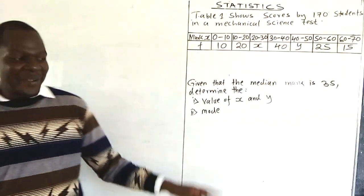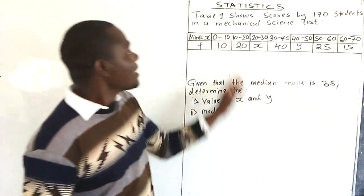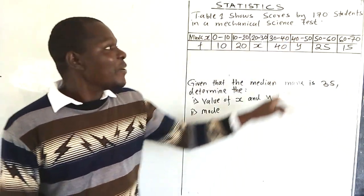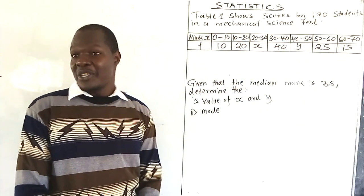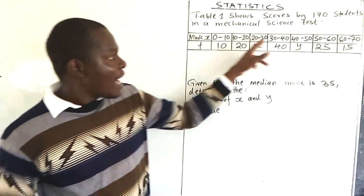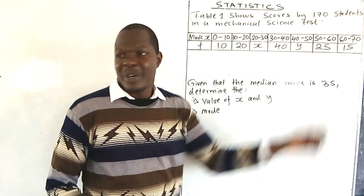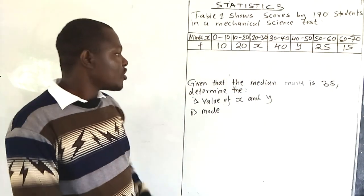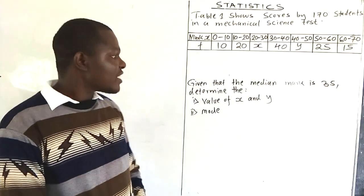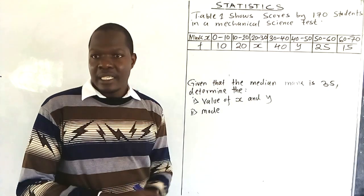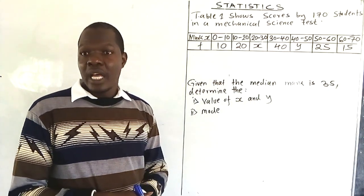Let us look at this question. Table 1 shows scores by 170 students in a mechanical science test. The marks are in the form of classes - grouped into classes - and frequency gives the number of students. Given that the median mark is 35, you'll be told to determine the value of x and y, and then to determine the mode.